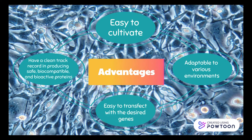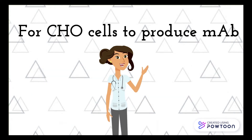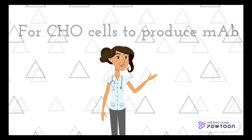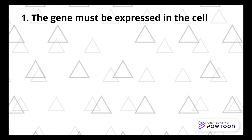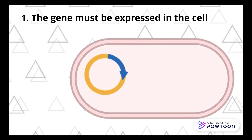With a clean record in producing safe biotherapeutic proteins, CHO cells are widely used as a stable mammalian cell line. For CHO cells to produce monoclonal antibodies, the genes must first be expressed in the cell, making plasmid an important component.